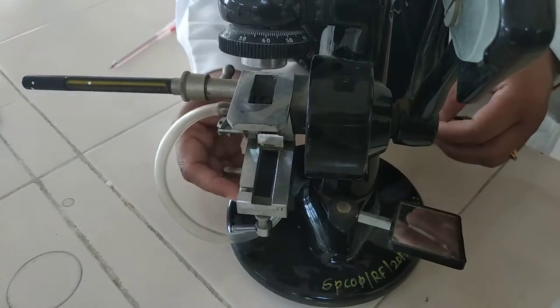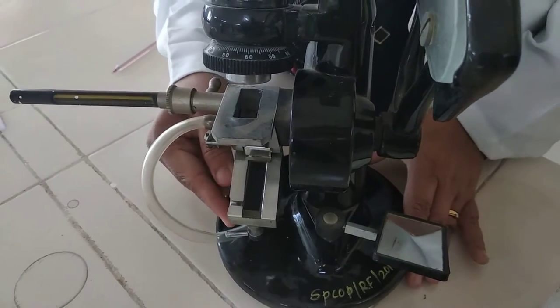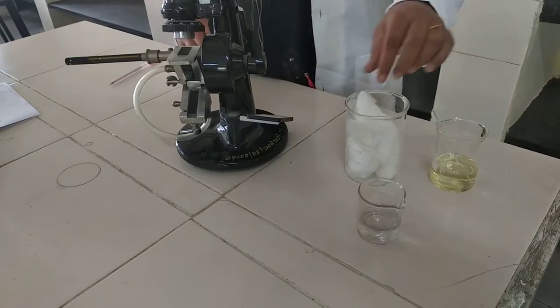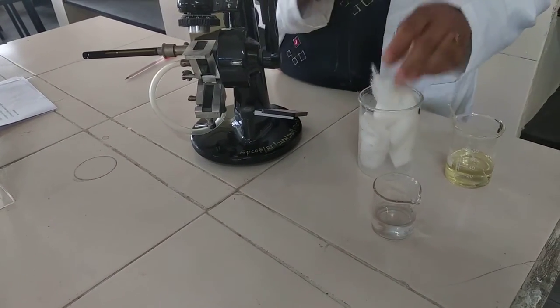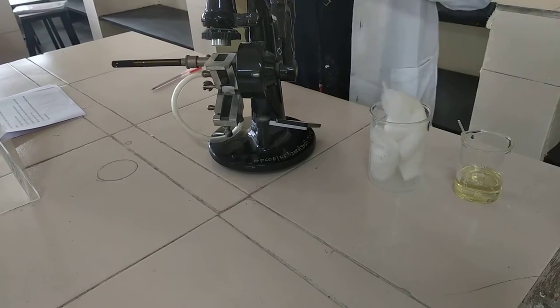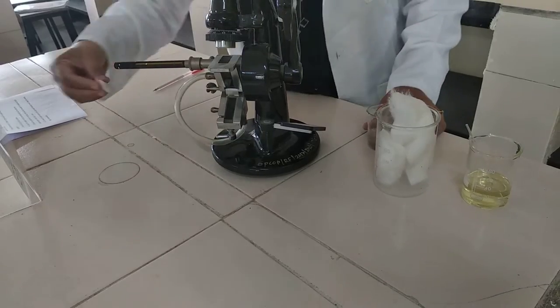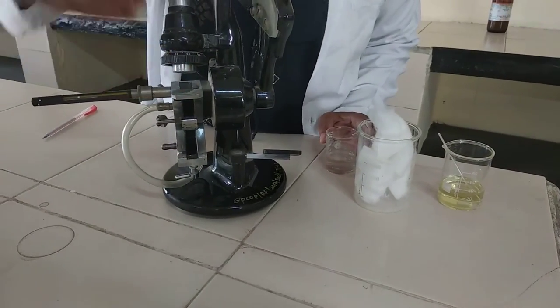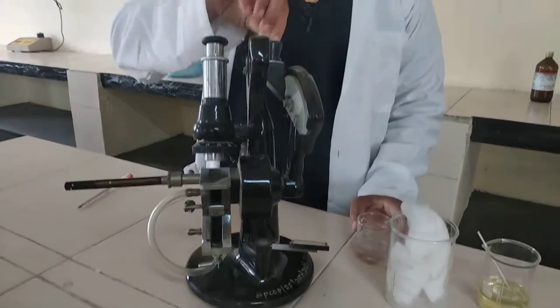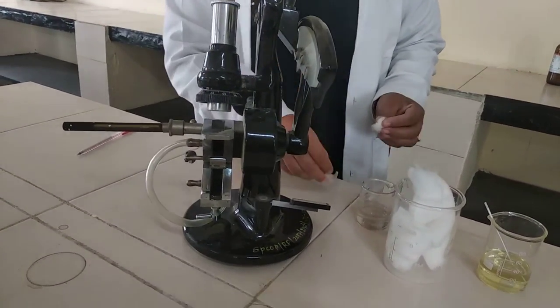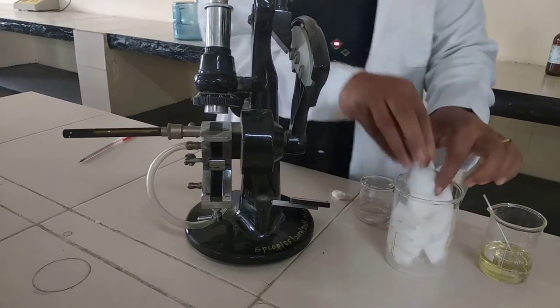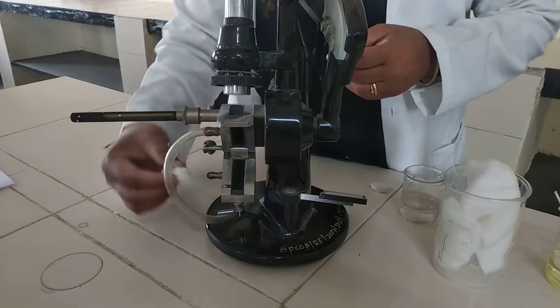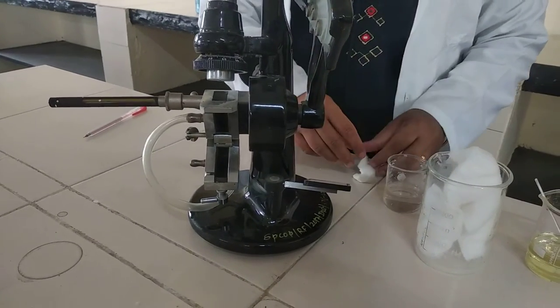Now we will see how to apply the sample. First of all, we have to clean this prism first. First, just take a drop of acetone, then clean the surface of our prism properly. Afterwards, this eyepiece also we have to clean properly. Then dry this prism surface very well. As we have used acetone, so it will become dry easily.